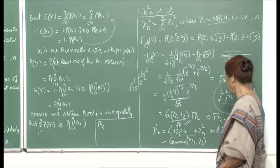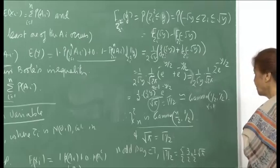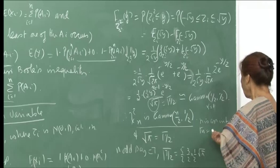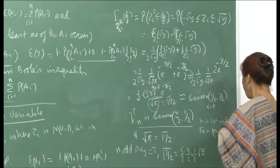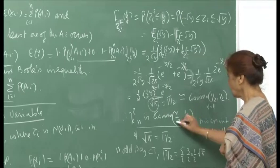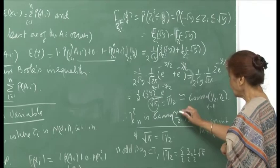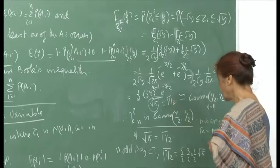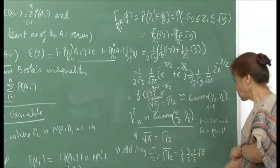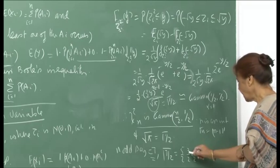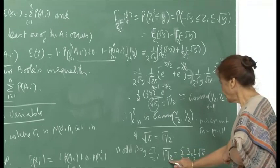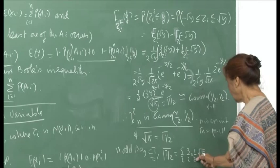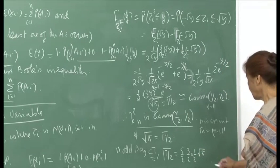So by adding up these independent Gamma(1/2, 1/2) random variables you get a chi-square n distribution. When n is an integer, Γ(n) = (n-1)!. If n is even, Γ(n/2) = (n/2 - 1)!. If n is odd, you are left with Γ(1/2) = √π. For example, Γ(7/2) = (5/2)·Γ(5/2) = (5/2)·(3/2)·Γ(3/2) = (5/2)·(3/2)·(1/2)·√π.